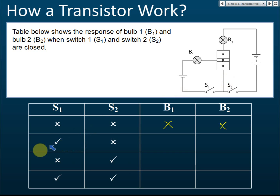In the second experiment, we switch on S1. What happens to B1 — will it light up? Yes, because when you switch it on, the circuit becomes complete and it's forward bias. Forward bias means the current can flow through the diode. It's a complete circuit so current flows and B1 lights up. S2 is off, so B2 will not light up because there's no current flow.